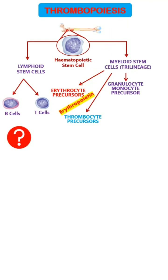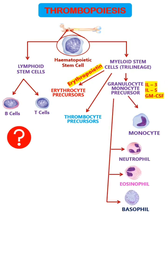For example, if erythropoietin acts, then erythroid precursors form. If interleukin-3, interleukin-5, or granulocyte monocyte colony stimulating factor act, then granulocyte monocyte precursors form. If the hormone thrombopoietin acts on myeloid stem cells, then thrombocyte precursors form.